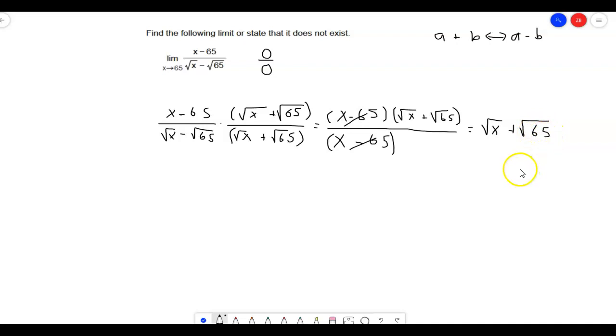Alright. So now we try it again. We plug that square root of 65 back in. So we're going to get the square root of 65 plus the square root of 65, which should give us just two square roots of 65.